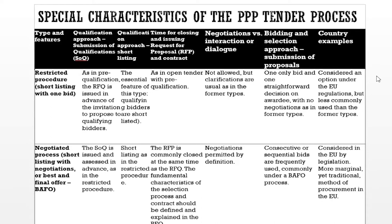Negotiated Process — Shortlisting with Negotiations or Best and Final Offer (BAFO): The SOQ is issued and assessed in advance, as in the restricted procedure, with shortlisting. The RFP is commonly closed at the same time as the RFQ; the fundamental characteristics of the selection process and contracts should be defined and explained in the RFQ. Negotiations are permitted by definition. Bidding and selection: consecutive or sequential bids are frequently used, commonly under a BAFO process. Country examples: considered in the EU by legislation; a more marginal yet traditional method of procurement in the EU.